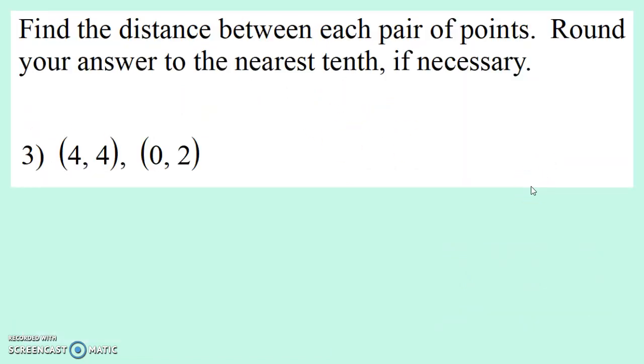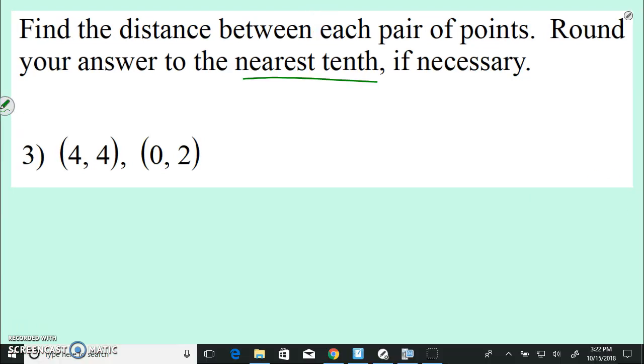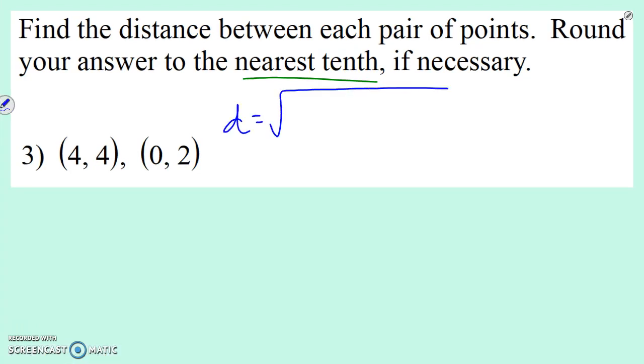Find the distance between each pair of points. Round your answer to the nearest tenth if necessary. So make sure you're paying attention to rounding. So distance formula. Remember, you've got to have this memorized. Distance is the change in x, so x2 minus x1 squared, plus the change in y, y2 minus y1 squared. And all of that is square rooted. I like to label x1, y1, x2, y2. And then we're just going to plug it in.